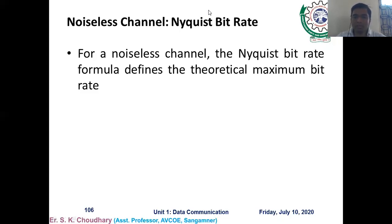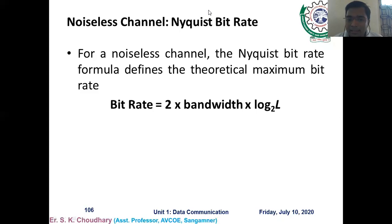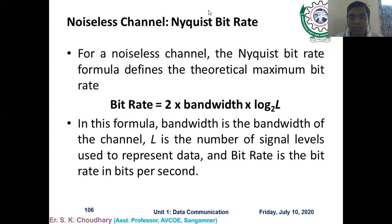The Nyquist formula is: Bit Rate = 2 × Bandwidth × log₂(L), where Bandwidth is the bandwidth of the channel, L is the number of signal levels used to represent the data, and Bit Rate is in bits per second.